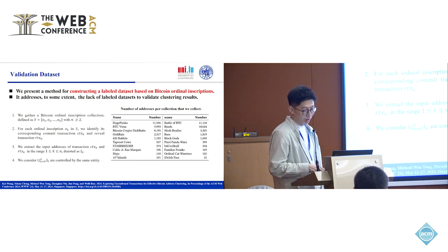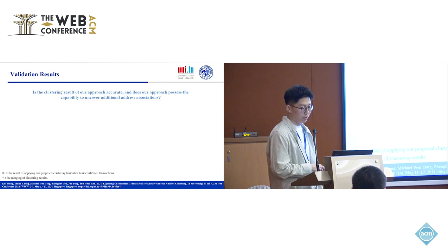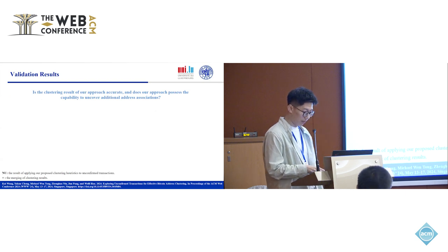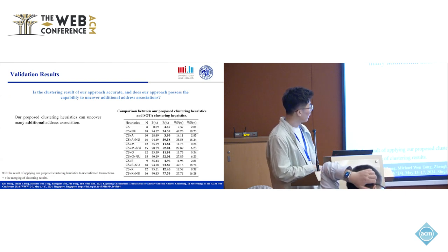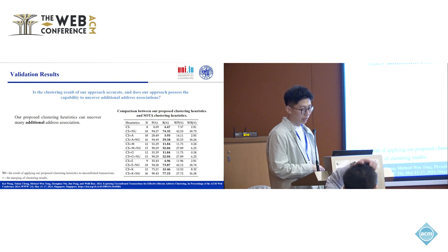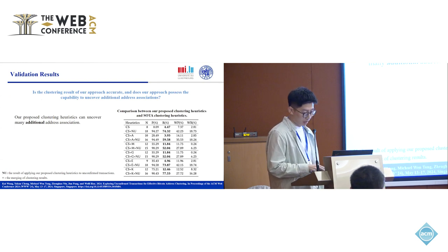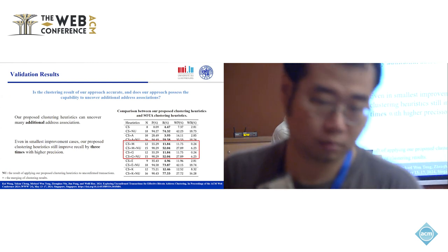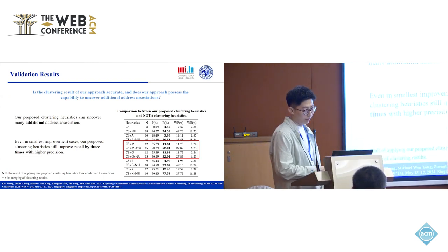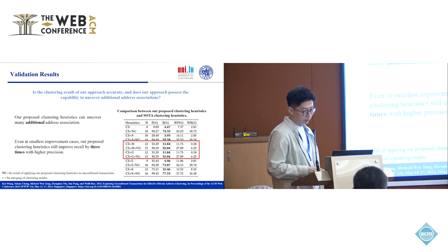We show the effectiveness of our approach by answering four questions. The first question is: is the clustering result of our approach accurate? The validation results show that our proposed clustering heuristics can uncover many additional address associations beyond the scope of state-of-the-art clustering heuristics. Even in cases of the smallest improvement, our heuristics still significantly improve recall with higher precision compared to state-of-the-art methods, demonstrating the effectiveness of incorporating unconfirmed transactions in Bitcoin address clustering.